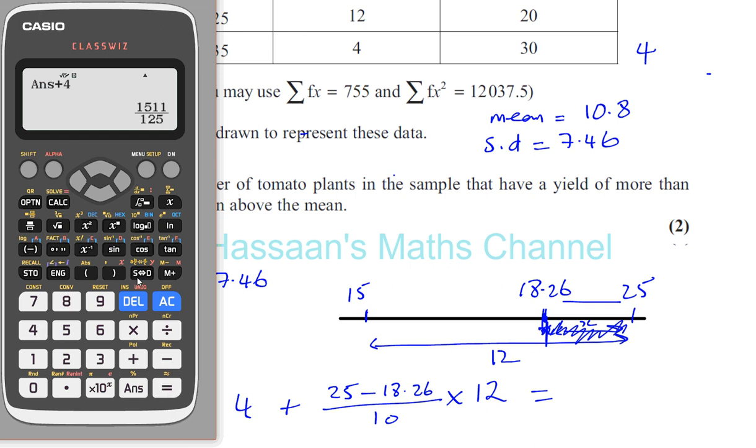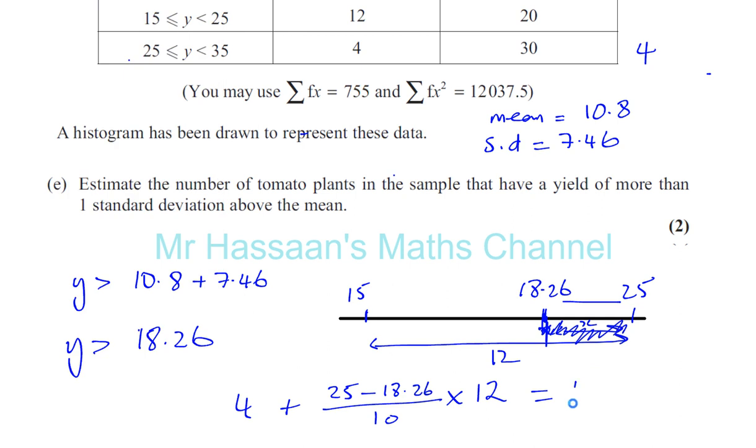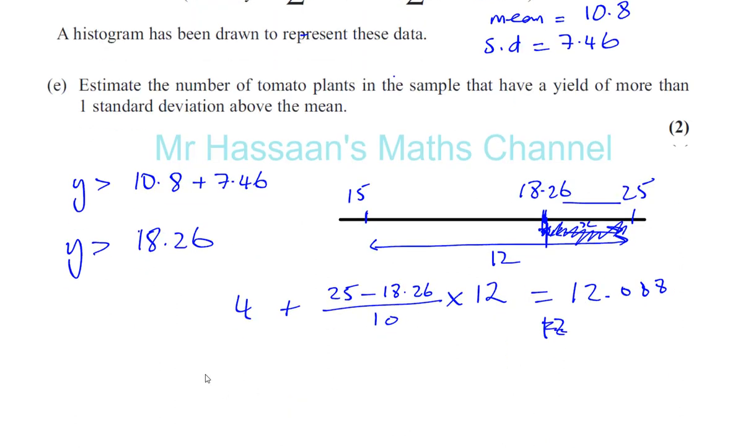That's 8.088 plus 4, which gives you 12.088. So you can estimate that there are 12 plants. Approximately 12 plants have a yield more than one standard deviation above the mean.